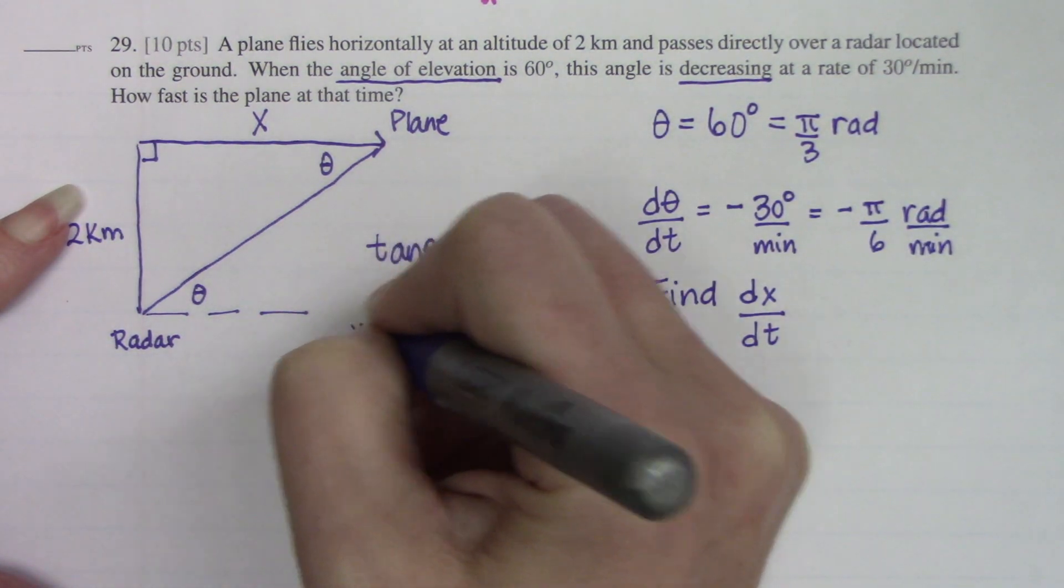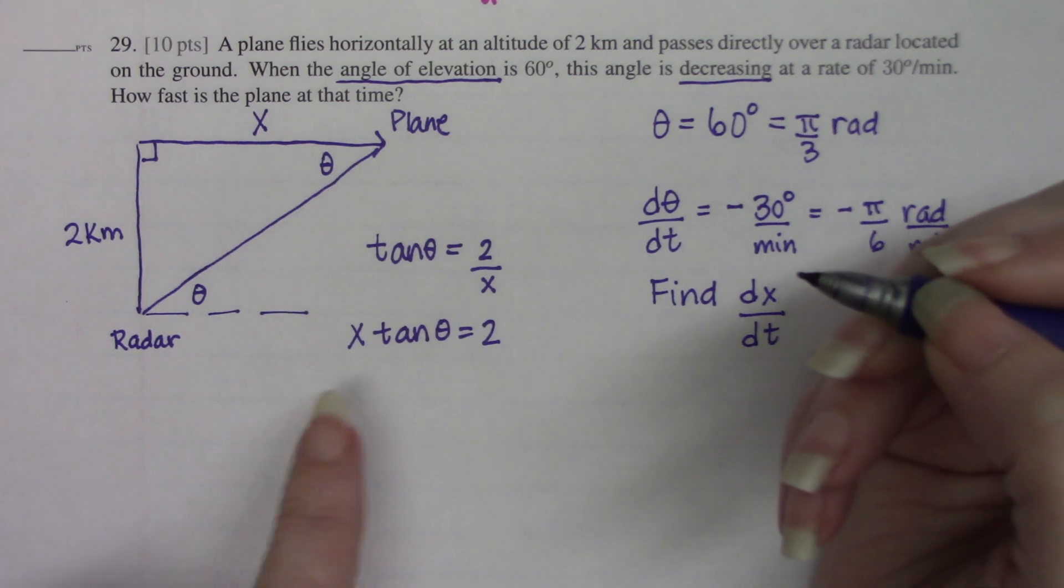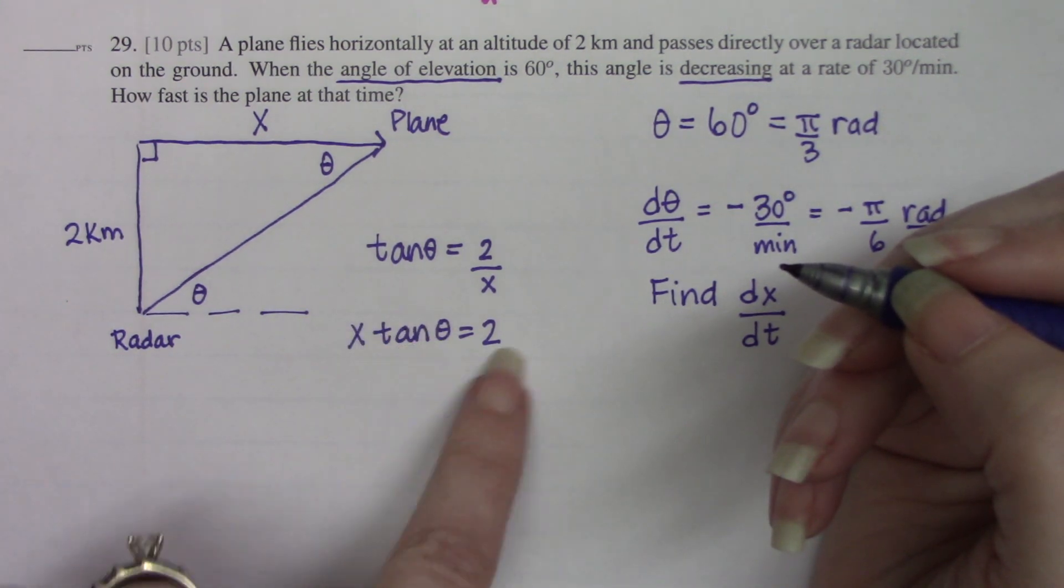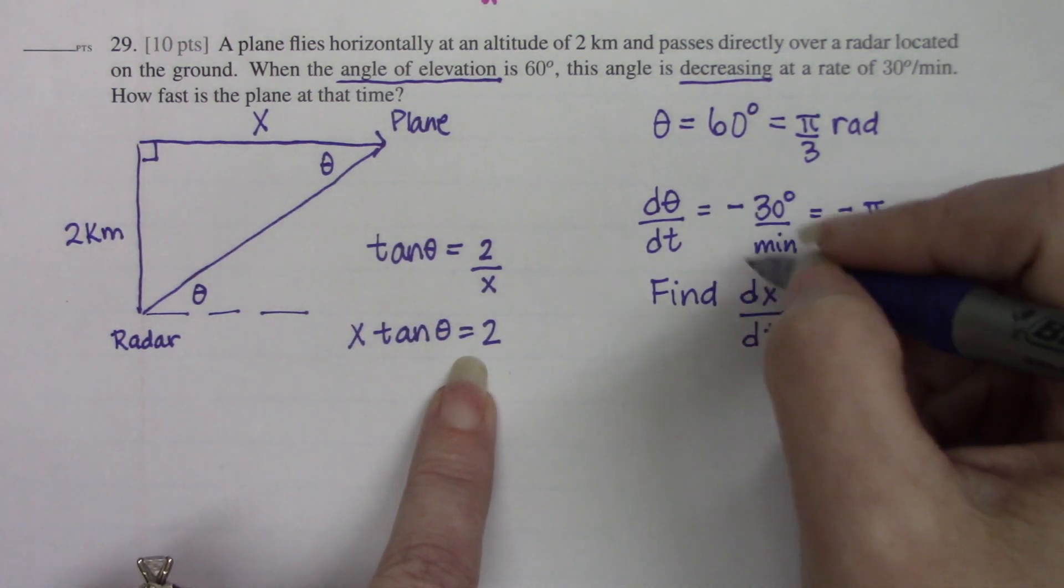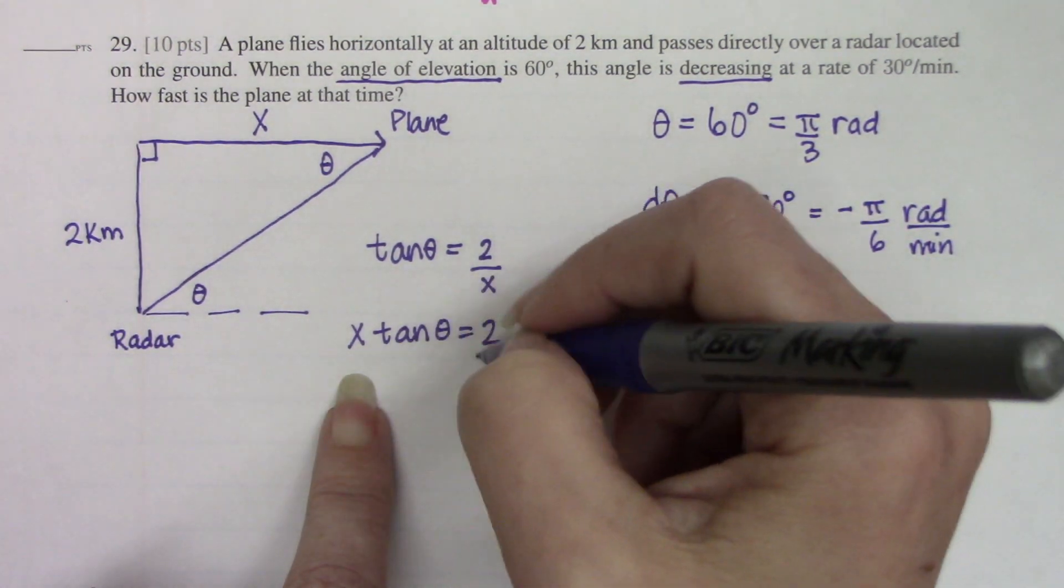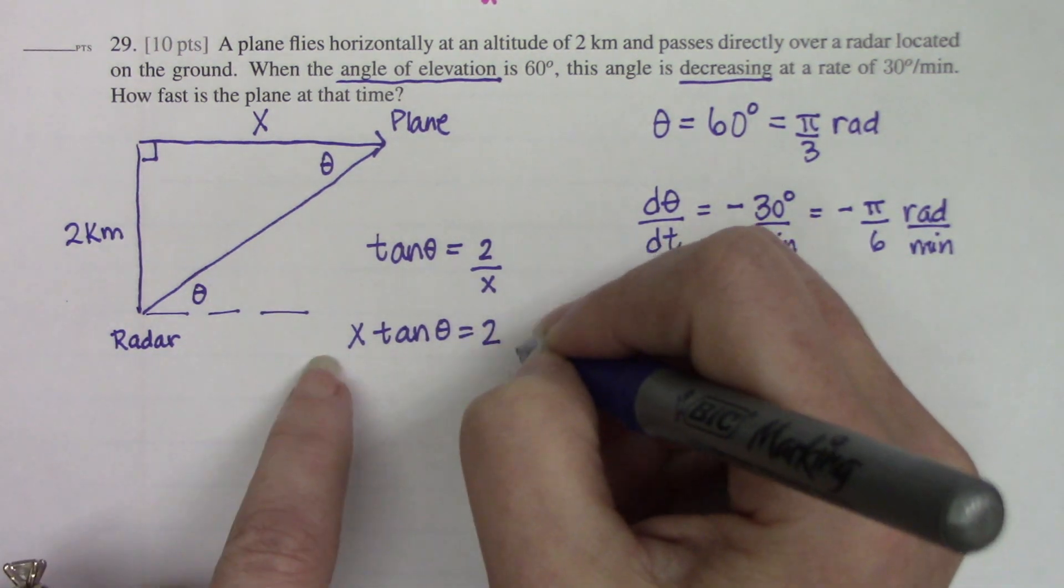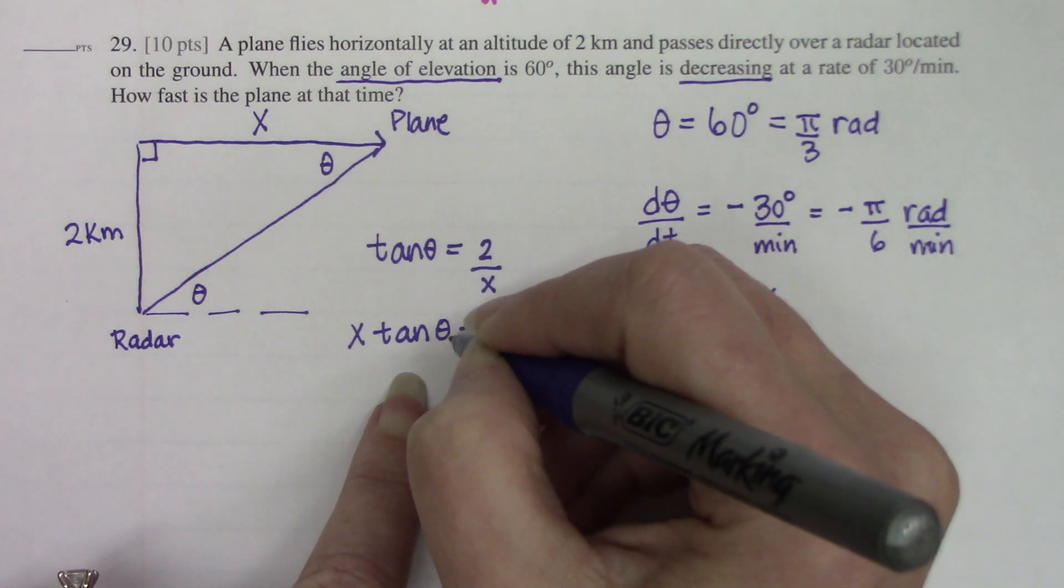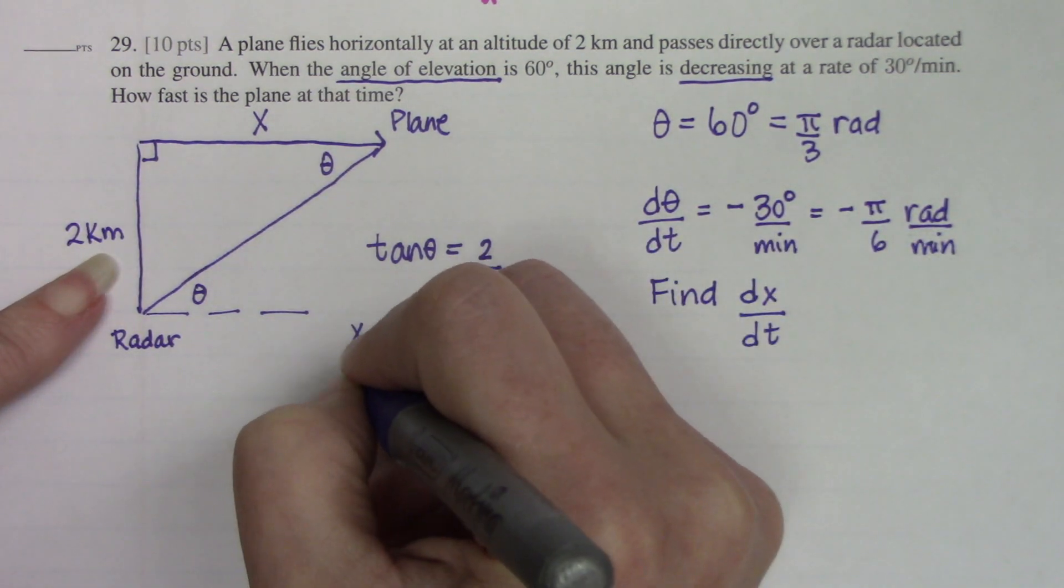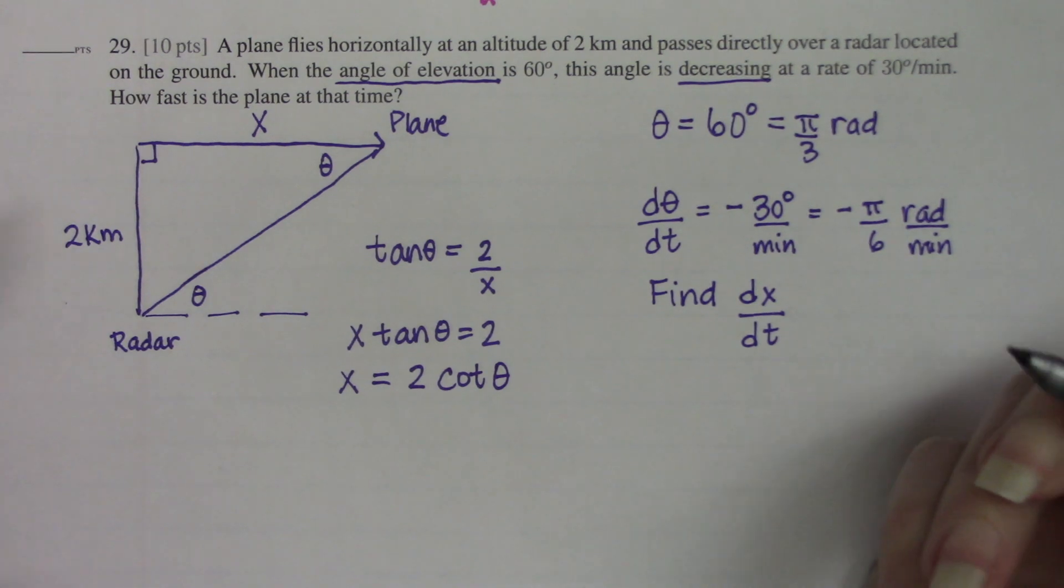Now if I solve this equation to eliminate any fractions because I don't want to do any quotient rules, I get x times tangent equals 2. When I go to take the derivative, this is going to require a product rule, and every time you take the derivative of something with a variable, you've got to tack on either a d theta dt or a dx dt. That's going to get really messy. It would be really nice if I could move this over to the other side so I could do simpler derivative rules. If I divide both sides by tangent, 1 over tangent is cotangent. So x equals 2 cotangent theta.